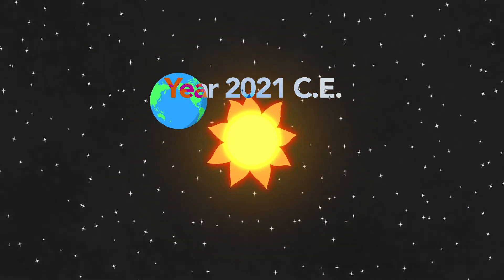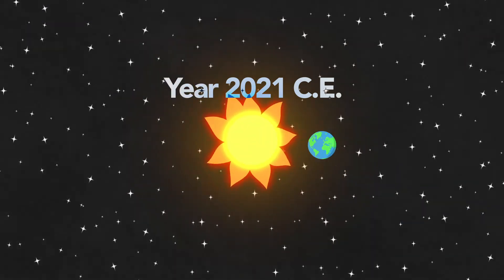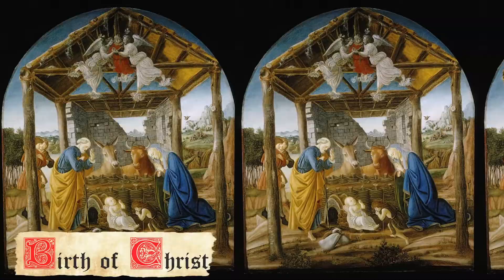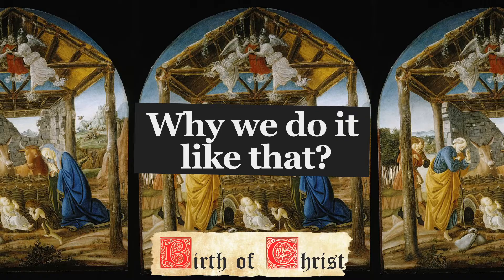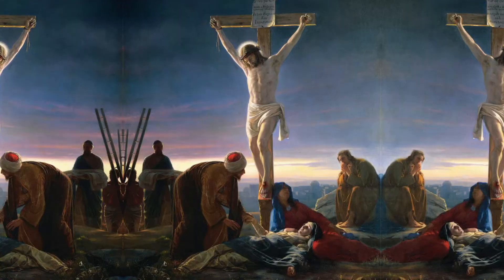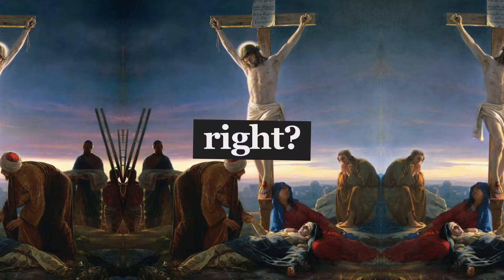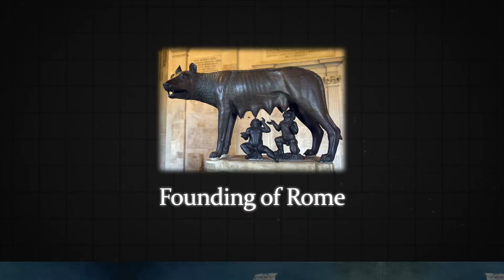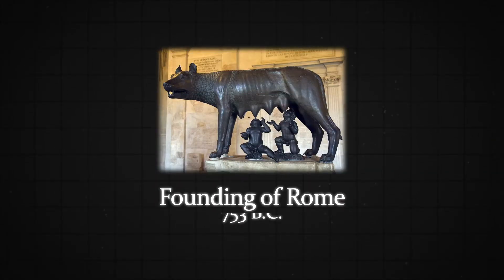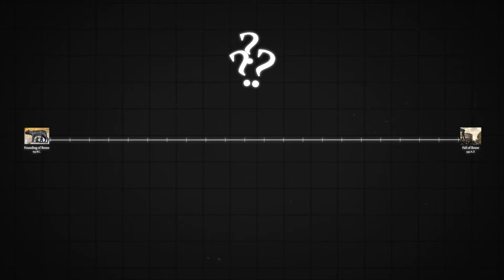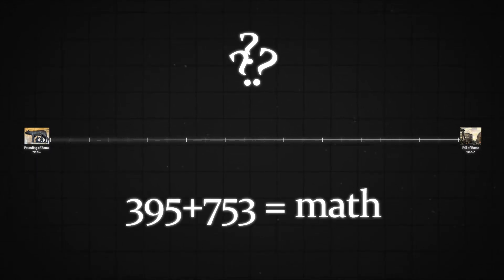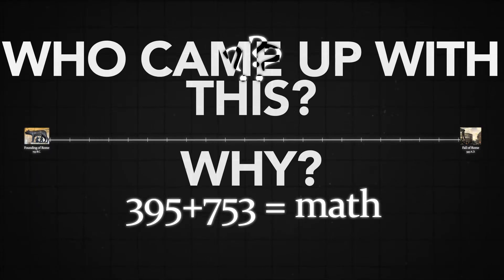We, of course, know that the 2021 in our lap count is marked as that thanks to the birth of Christ. But have you ever wondered why we do it like that? People had to use something before Jesus was even a thing, right? For example, if we look at the founding of Rome, we see that it took place in 753 BC, but the fall of Rome was in 395 AD, and it's not easy to actually see how long this is — we have to do things like math. Who came up with this, and why?